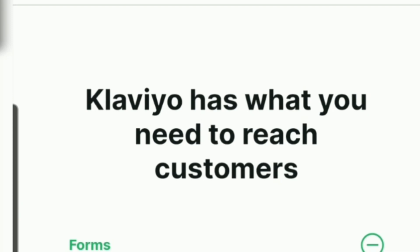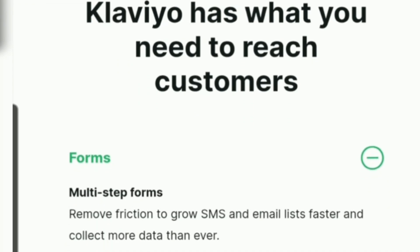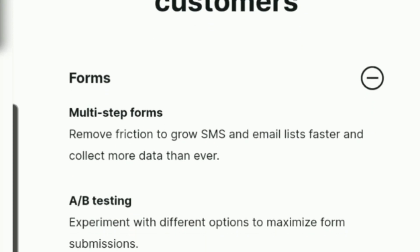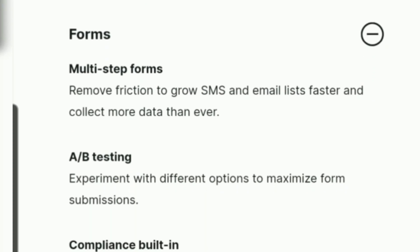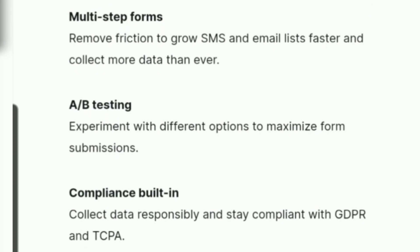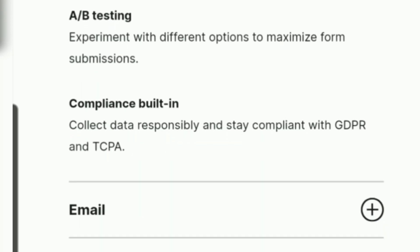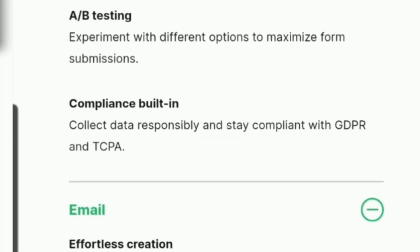I just press the plus button and in the form option there are a lot of choices. There is a multi-step form and A/B testing where you can remove friction to grow your SMS and email list faster and collect more data. In A/B testing, you can experiment with different options to maximize form submissions, collect data responsibly, and stay compliant with GDPR and TCPA.